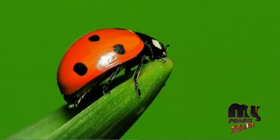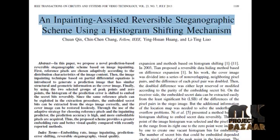Welcome to clickmyproject.com. An inpainting-assisted reversible steganographic scheme using a histogram shifting mechanism. Difference expansion method is used for the reversible data hiding technique, but the additional information of the location map was needed to solve the underflow and overflow problems.